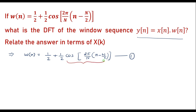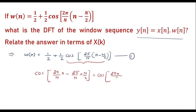Now I will try to simplify this further. Consider only the cosine part first. That is cos of 2 pi by N into N minus 2 pi by N into N by 2, which is cos of 2 pi N divided by N minus pi. So it is of the form cos A minus B, that is cos A minus B equals cos A cos B minus sin A sin B.